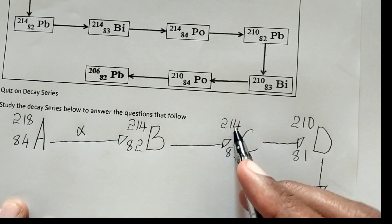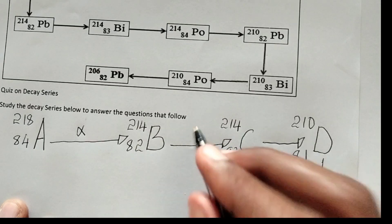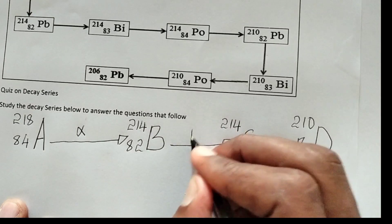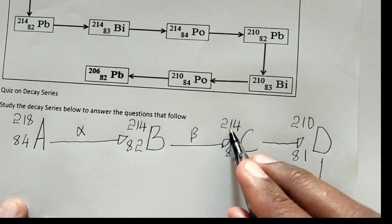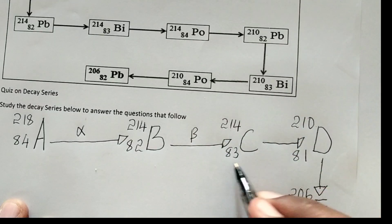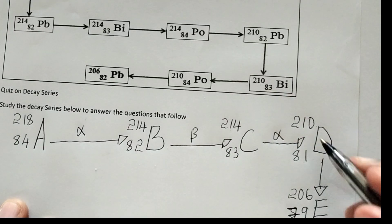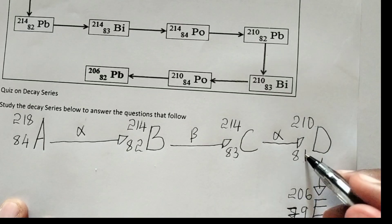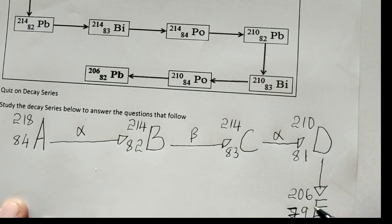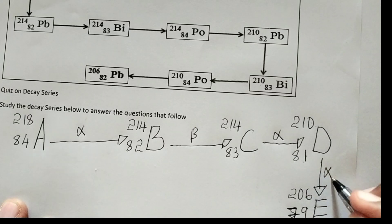Analyzing the steps: A (218, 84) → B (214, 82): mass number decreases by 4, atomic number decreases by 2 — this is one alpha particle. B (214, 82) → C (214, 83): mass number stays the same, atomic number increases by 1 — this is one beta particle. C (214, 83) → D (210, 81): this is one alpha. D (210, 81) → E (206, 79): mass number decreases by 4, atomic number decreases by 2 — this is again one alpha.